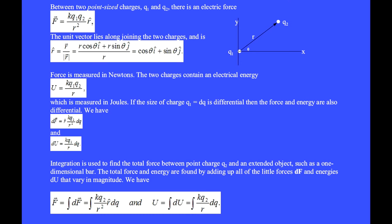Integration is used to find the total force between point charge Q2 and an extended object, such as a one-dimensional bar. The total force and energy are found by adding up all the little forces dF and energies dU that vary in magnitude. The total vector force F equals the integral of dF equals KQ2 over R squared R hat dq, and the total energy U equals the integral of dU equals KQ2 over R dq.